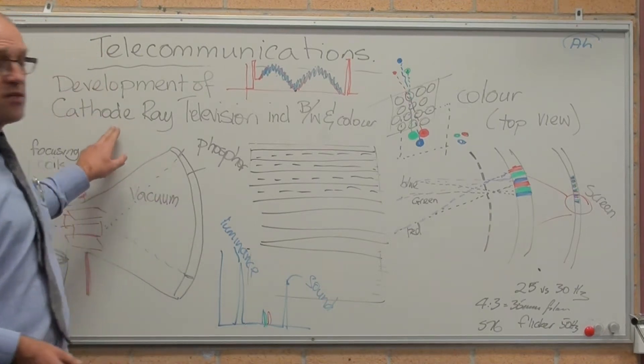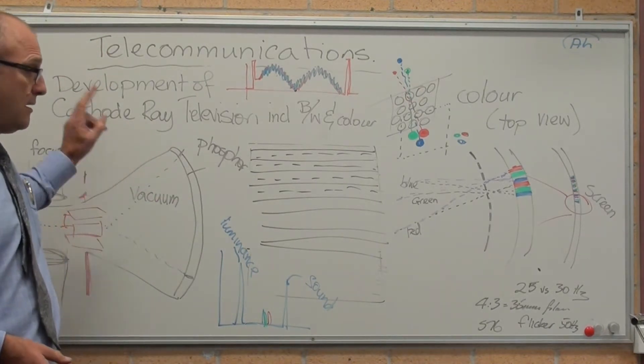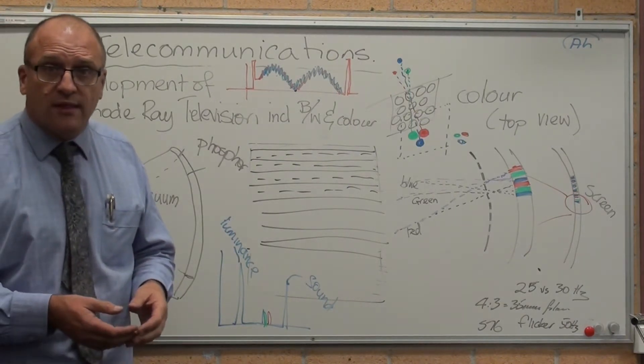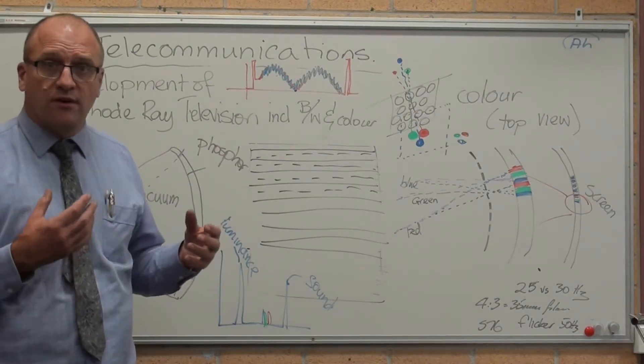How television transmission works: the development of black and white and colour. First up, black and white television was the first one that was invented or developed.